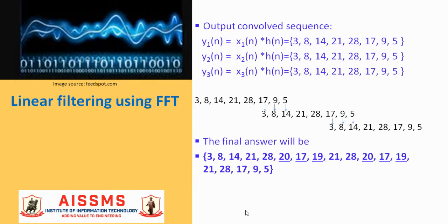The next step is to convolve each of the subsequence with the impulse response. Upon convolving the first sequence x1(n) with h(n), the output convolve sequence y1(n) is as shown: 3, 8, 14, 21, 28, 17, 9, and 5. The resultant output convolve sequences y2(n) and y3(n) are identical to y1(n) as all three subsequences x1(n), x2(n), and x3(n) were identical.